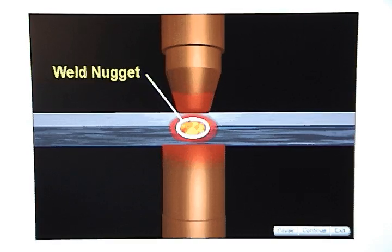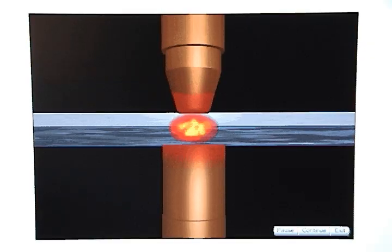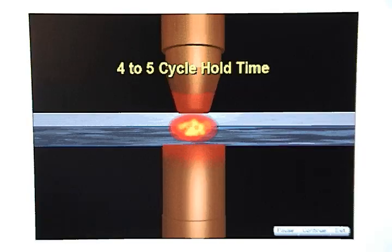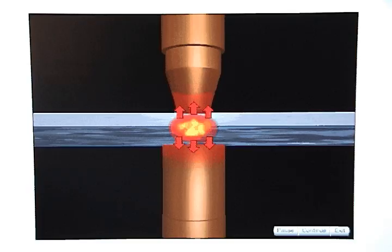Then a weld nugget is formed. When the weld time is complete, the current stops flowing. Then a hold time of approximately four to five cycles is used to give the weld tips enough time to absorb heat from the outer perimeter of the weld nugget and cause it to harden before the weld tips open.